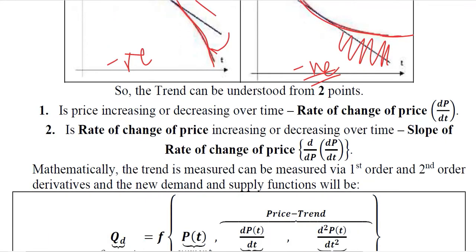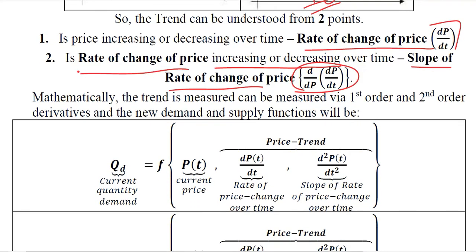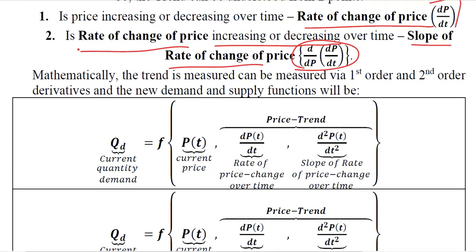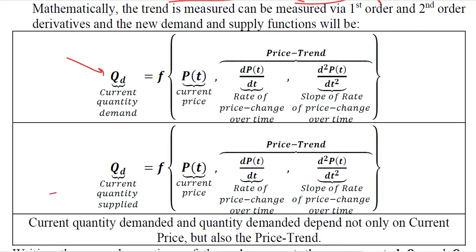After understanding these four possible shapes of the price function, we can now include dp/dt, the rate of change of price over time, and d²p/dt², the rate of change of that rate, into the quantity demanded (qd) and quantity supplied (qs) functions.